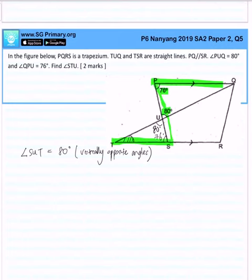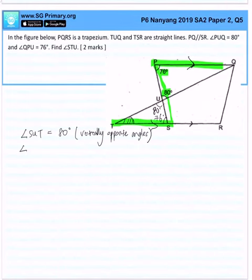So where can we apply alternate angle? First of all, we must establish the fact that PQ and the line ST are parallel, which is stated in the question. So we know that the angle PST is equal to 76 degrees because of alternate angle.